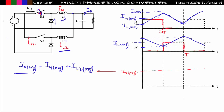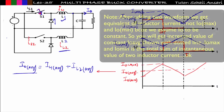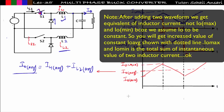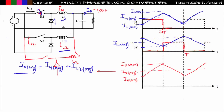Adding the two waveforms gives i0_max and i0_min. We have increased the load-sharing capacity by connecting two buck converters in parallel. I can also connect three canonical switches for even more load. If load current is 150 amperes, then 50 amperes goes through L1, 50 through L2, and 50 through L3. Overall the load current increases and the value of each individual inductor current is reduced.